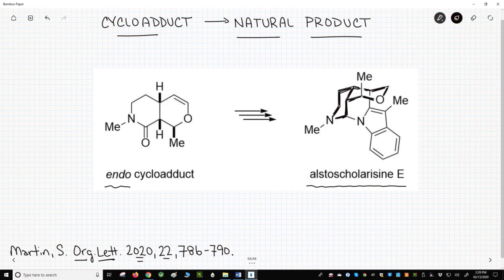In conclusion, the Martin research group used an intramolecular hetero-Diels-Alder reaction to form the core of a natural product, alstoscholarine E. If you are interested in seeing all the synthetic details, then check out the reference on this slide or in the video description.